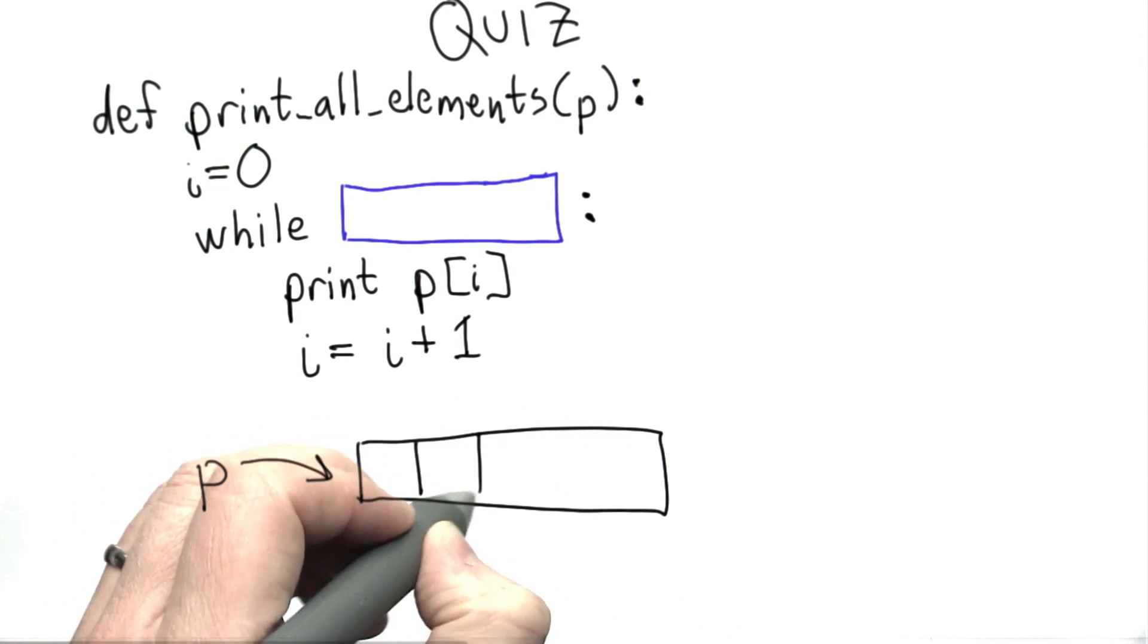We want the procedure to work on any list, so we shouldn't assume anything about the list that was passed in. It could be any length.